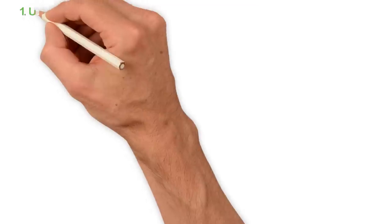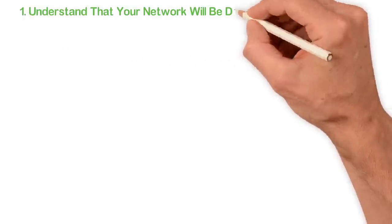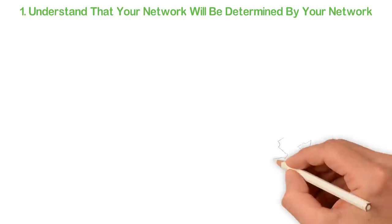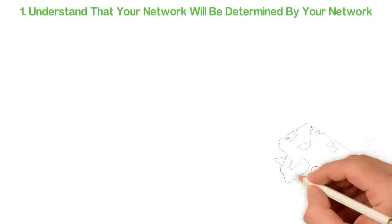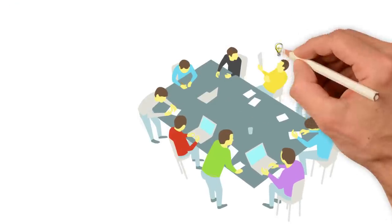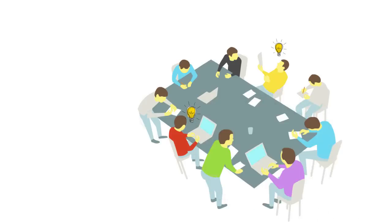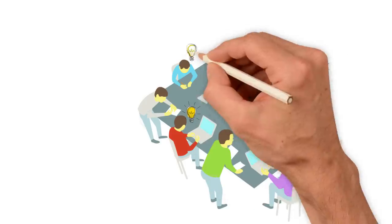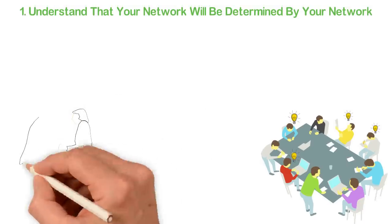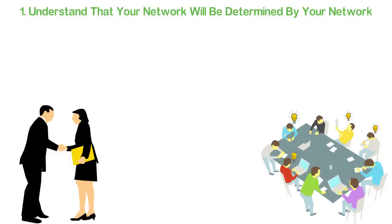So how do you use people? Number 1: Understand that your net worth will be determined by your network. To start with, most people simply don't understand that they can never grow beyond who they know. To succeed in life, you must understand that people are gold. People are probably the most important asset you can ever have because real people have real gifts that can change your life. Some of them will give you information, some will give you money, and some will give you just a book. Any of these can transform your life speedily, so the very first thing you must do if you want to use people is to understand that people are gold. They are to be cherished.